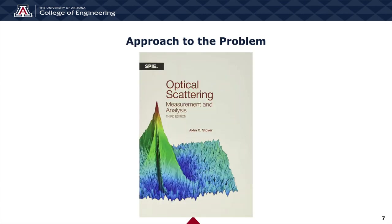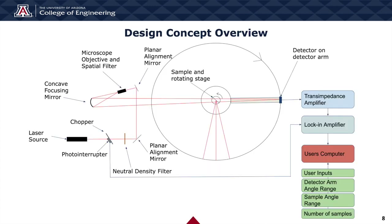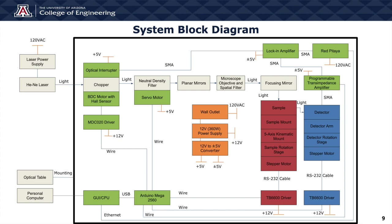We approached the design with a literature review of John Stover's book, Optical Scattering Measurement and Analysis. Light from a HeNe laser shines through a rotating chopper wheel at a fixed frequency, propagates through a neutral density filter, hits two planar alignment mirrors, then passes through a microscope objective to expand the beam. A precise pinhole is used as a spatial filter to clean up the beam, and a concave mirror focuses the beam through the sample plane onto the detector. The detector is mounted on a detector arm controlled by a rotation stage, and the sample is mounted to a kinematic mount on a sample rotation stage. Stepper motors and drivers control both stages, an Arduino controls the motor drivers and the transimpedance amplifier switch, and the analog lock-in amplifier receives inputs from the transimpedance amplifier and photo interrupter on the chopper. The lock-in amplifier outputs to the RedPitaya for data acquisition, and the GUI on the user's PC connects to the RedPitaya and Arduino.